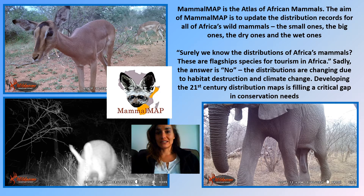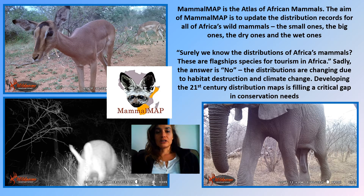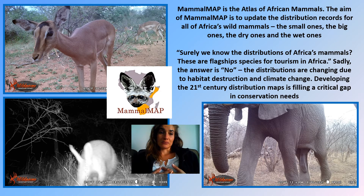One of the projects in the Virtual Museum that especially benefits from camera trap photos is MammalMAP, the Atlas of African Mammals. You might think that mammals — usually the most popular taxa for people to study in terms of conservation — surely we know the distribution of Africa's mammals. These are flagship species in many cases, especially for tourism, but sadly the answer is no.